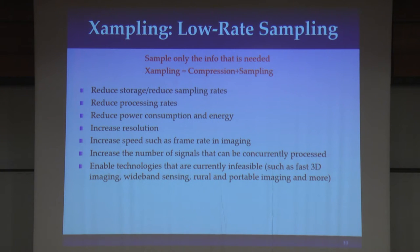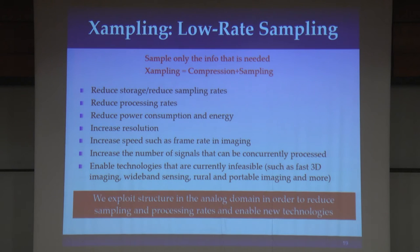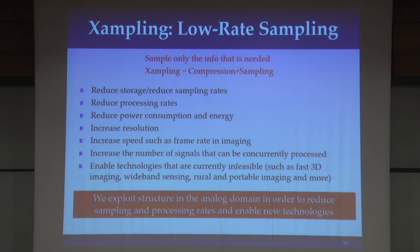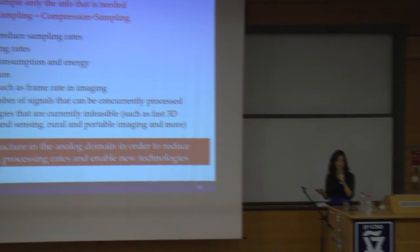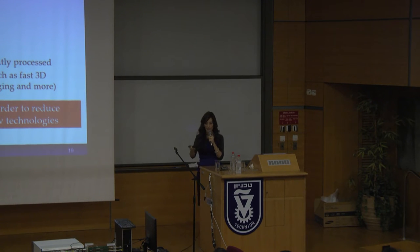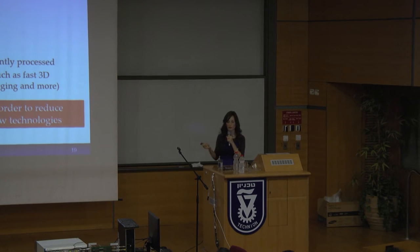The goal is to sample only those parts of the signal that are important — only those parts that contain information. If we can do this, we reduce storage and power, but there are also other benefits: we can increase resolution, increase speed in imaging, increase the number of signals we could process, and enable technologies limited by these high rates — such as 3D ultrasound imaging, wireless imaging, and cognitive radio, which will all be demos we see here today.